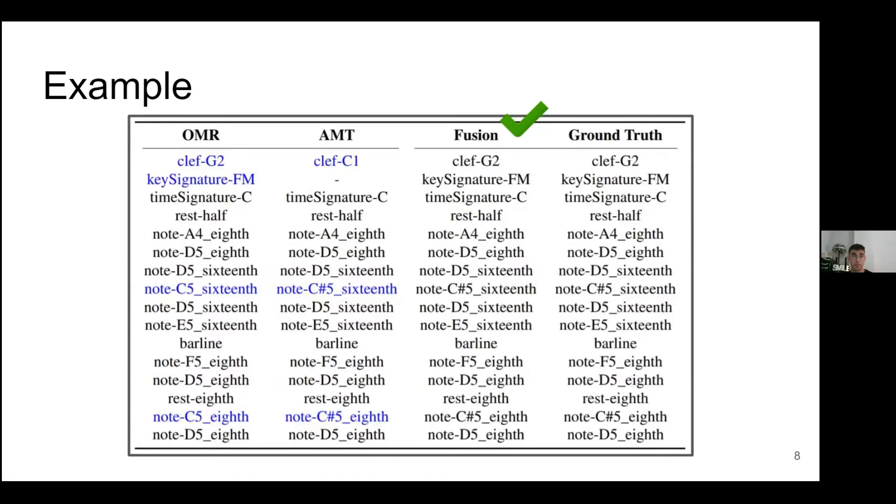If we see this example, we can validate our hypothesis that in the case of OMR, we can see that it's good at predicting the key and the clef. And on the other hand, AMT is good at predicting the pitch of the notes. So at the end, when we fuse both, we get our results.